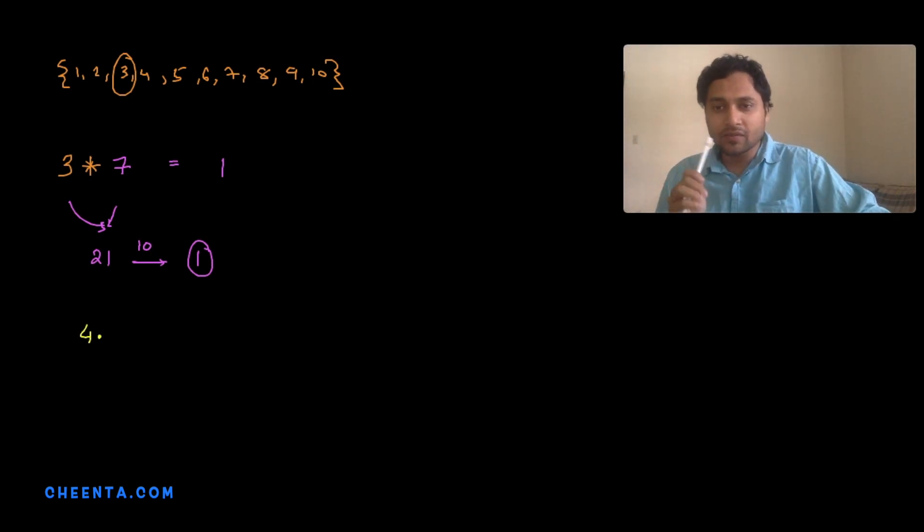We also hinted in the previous video that 4 will not have an inverse, and you can check this by experiment. You can multiply or operate 4 with each number in the set and you will not get 1. For example, 4 operated with 6: this is 4 times 6 is 24, you divide by 10, the remainder is 4. So the output of this operation is 4 when you operate it with 6.